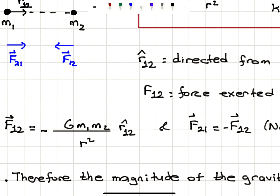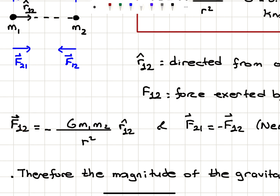F₂₁ equals minus F₁₂ by Newton's third law — action-reaction. Writing the force as a vector: F₁₂, the force exerted by object 1 on object 2, is minus G·M1·M2 over R² times R̂₁₂. So F₁₂ points in the minus R̂₁₂ direction, towards M1, or equivalently in the R̂₂₁ direction. And F₂₁ equals G·M1·M2 over R² in the plus R̂₁₂ direction.